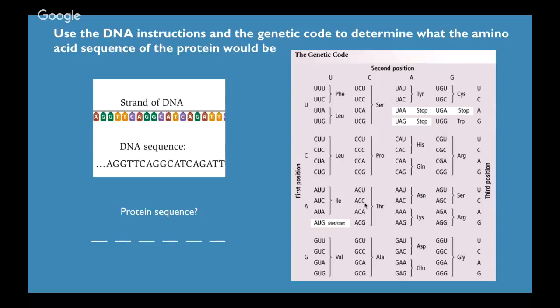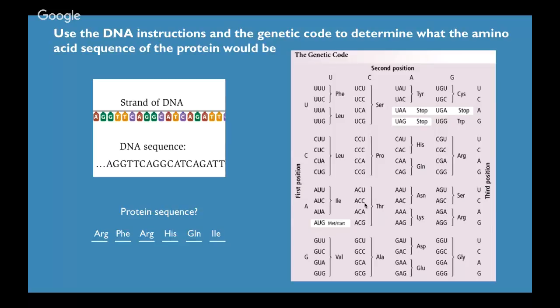So the protein sequence for this random chunk of DNA would be arginine, phenylalanine, arginine, histidine, glutamine, and isoleucine. Going through the first two: AGG — starting at the A column, the G column, AGG is about three quarters of the way down — that's arginine. Then TTC, which would be UUC here — that's up in the top left corner for phenylalanine. I hope that makes sense; at the end if it doesn't, I'm happy to answer more questions about that.